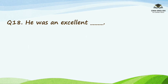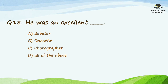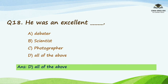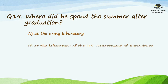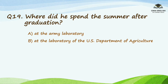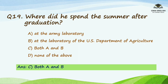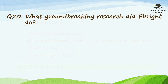Question number eighteen: he was an excellent blank. Options are a debater, scientist, photographer, or all of the above. The right answer is all of the above. Question number nineteen: where did he spend the summer after graduation? Options are at the army laboratory, at the laboratory of the US Department of Agriculture, both A and B, or none of the above. The correct option is both A and B — at the army laboratory and at the laboratory of the US Department of Agriculture.